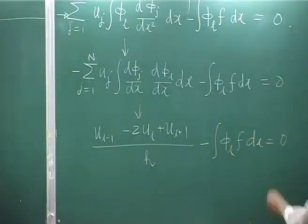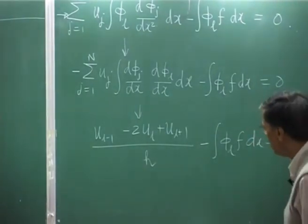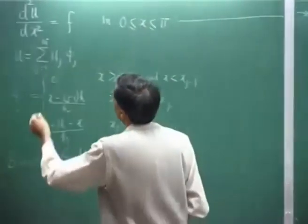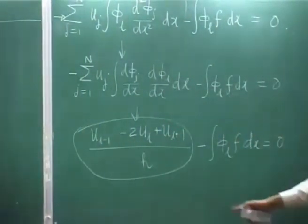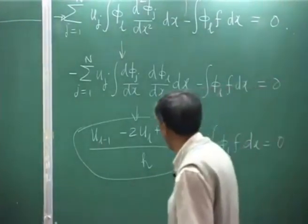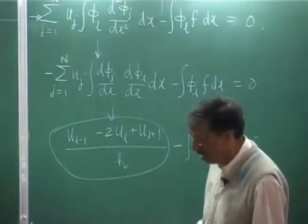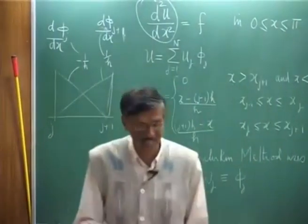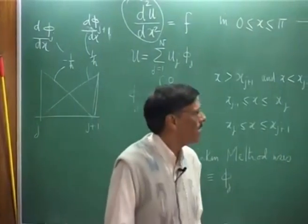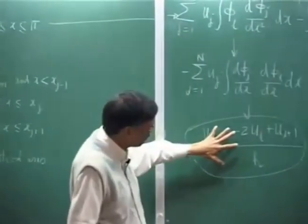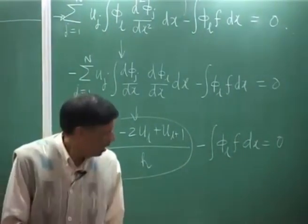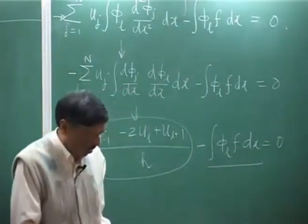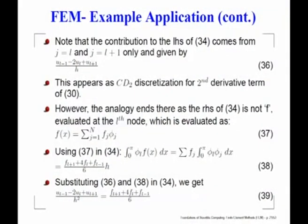Before closing yesterday, I mentioned that the second derivative term contributes this quantity, and if you divide by h-squared, that is something like a CD2 kind of representation for the second derivative. Quite often in many books they say it is a second-order accurate representation, which is misleading, because although this looks like a CD2 stencil, this is not simply f of L. To obtain this term, you also express f(x) in terms of its various Galerkin modes — those nodal values f_j times phi_j.